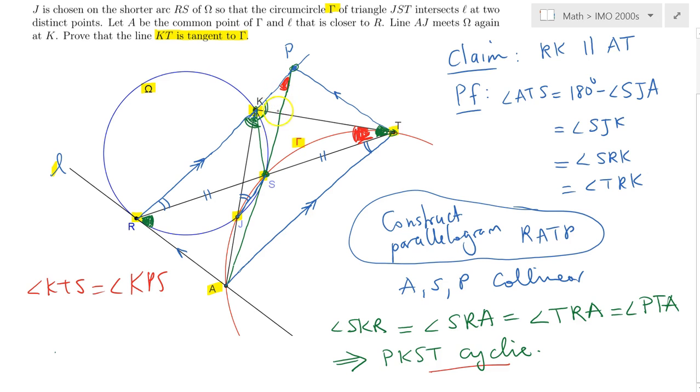But angle KPS in turn equals angle KPA obviously, and because it's a transversal on the parallel lines RP and AT, by alternate interior angles that should simply equal angle PAT or simply angle SAT. And boom, that obviously proves the result because we were able to represent the minor arc ST with angle SAT, but at the same time this being equal to angle KTS immediately implies that in fact KT is tangent to gamma at T.